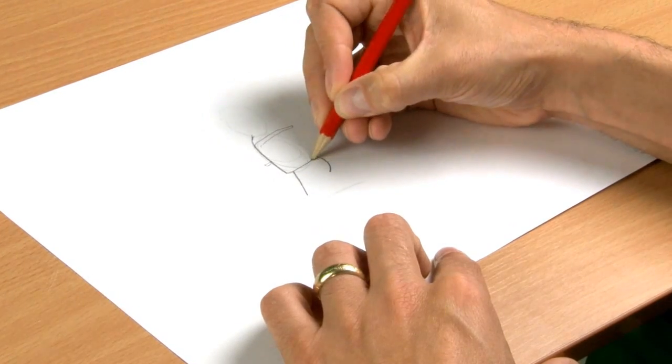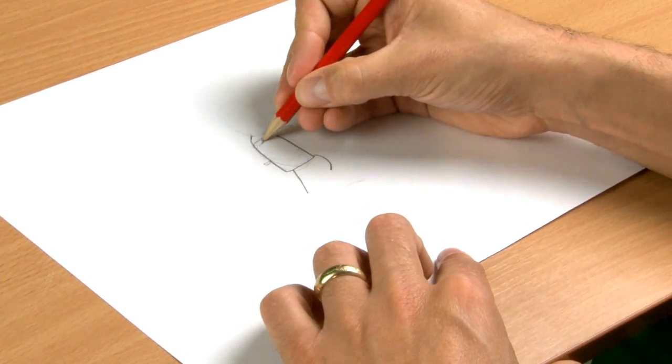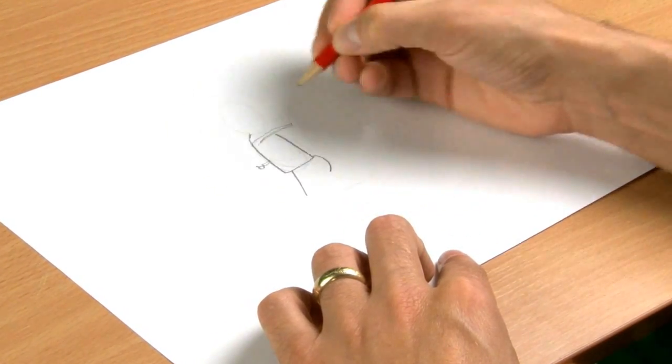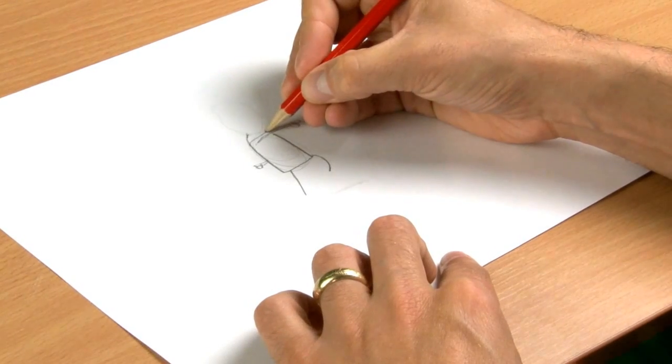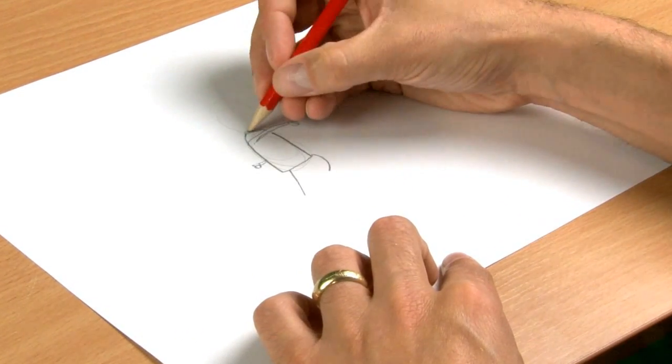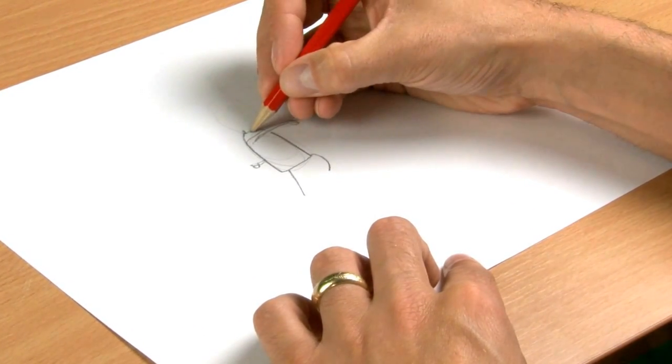So we'll just draw those things in a little more clearly now. There's his front arm, his back hand, his front hand, and then we're going to draw his neck in, because Floyd has quite a skinny little neck.